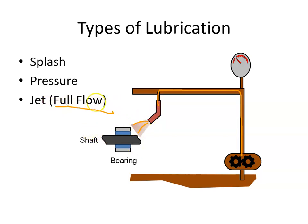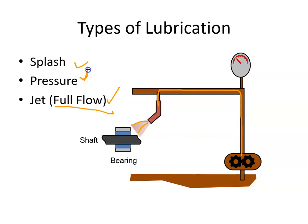So that's basically the three types of lubrication. In our gas turbine engines we would get jet lubrication for the bearings, and pressure and splash lubrication maybe in the accessory gearbox.